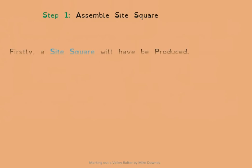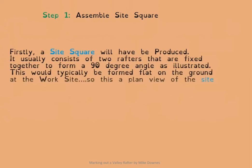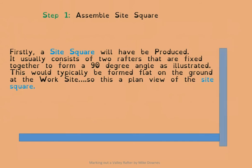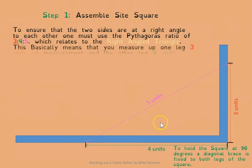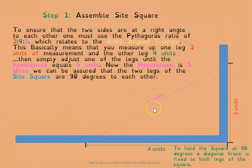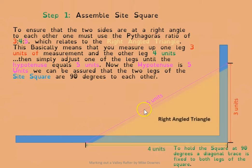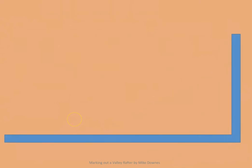The first step is to create a side square. A side square is just two rafters held together to form an L, and the angle of that L should be 90 degrees. Using the 3-4-5 method, you'll be able to get those two legs at 90 degrees to each other. If you have 3 units one way and 4 units the other way, when the diagonal measures 5 units you know you have a right-angle triangle.